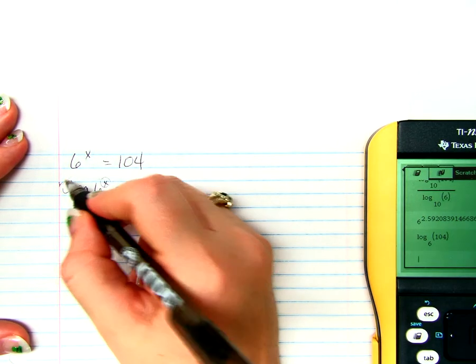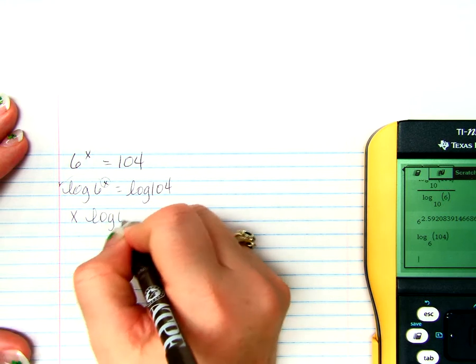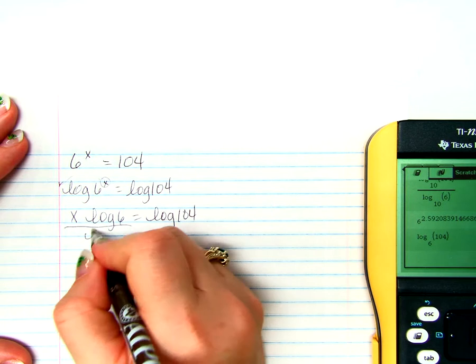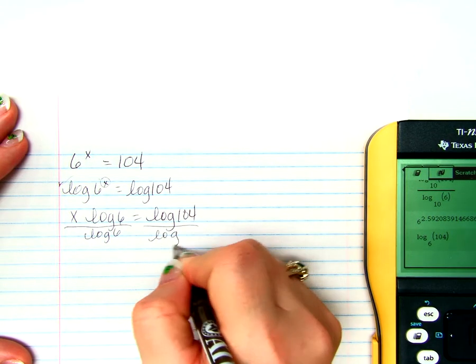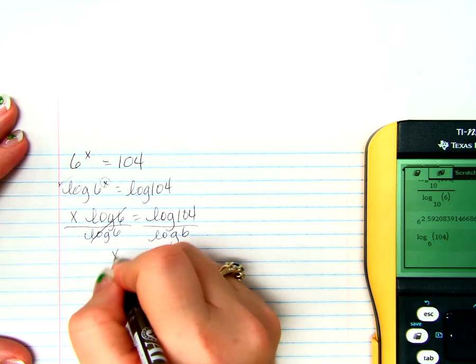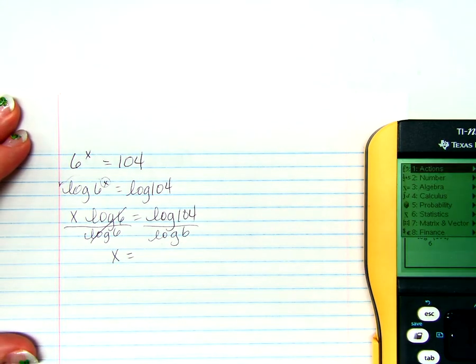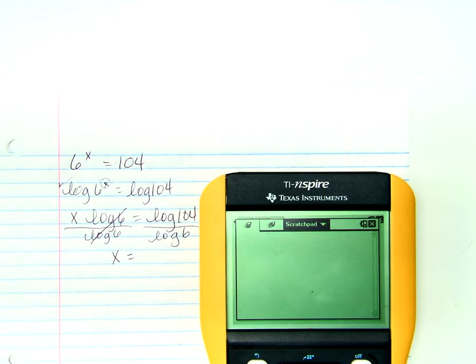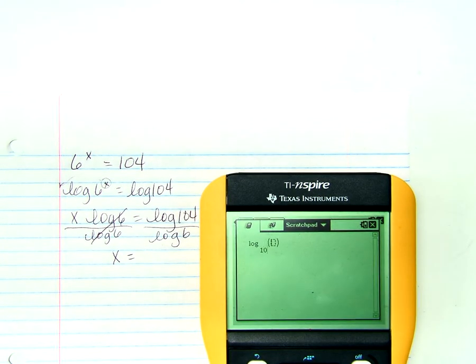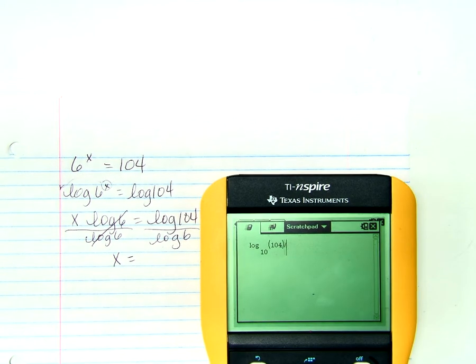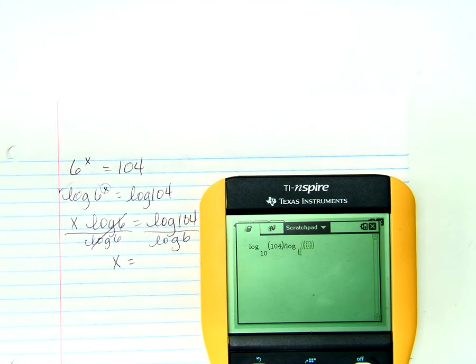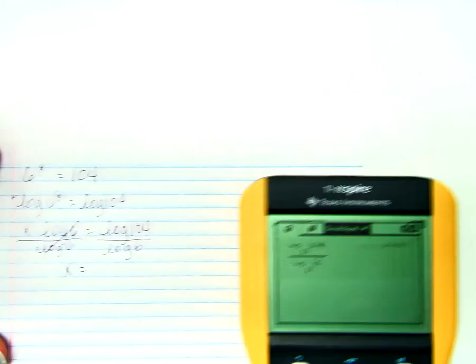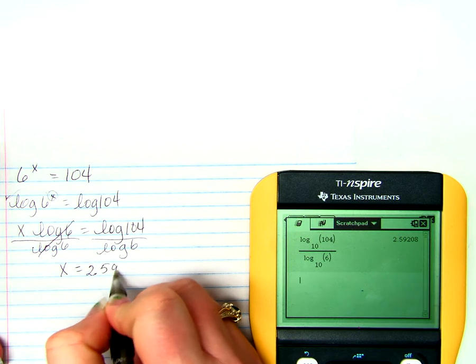We'd have to bring this x down in front as a multiplier, so we'd have x log of 6 equals the log of 104. And to solve for x, we would divide both sides by the log of 6. That simplifies to x equals the log base 10 of 104 divided by the log base 10 of 6. So we would get an answer of 2.59208.